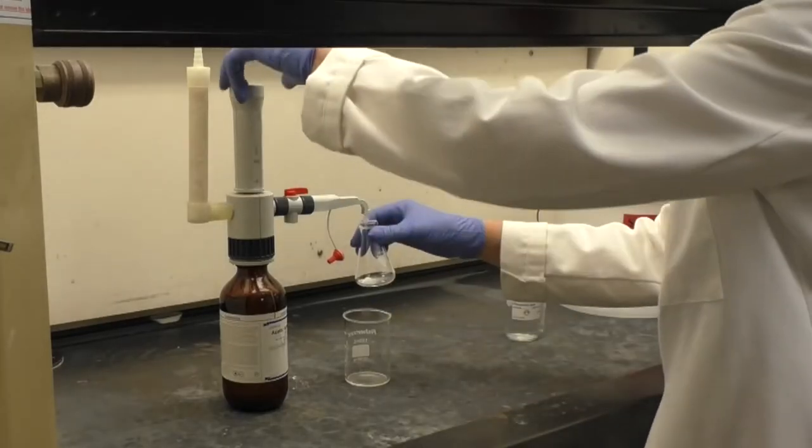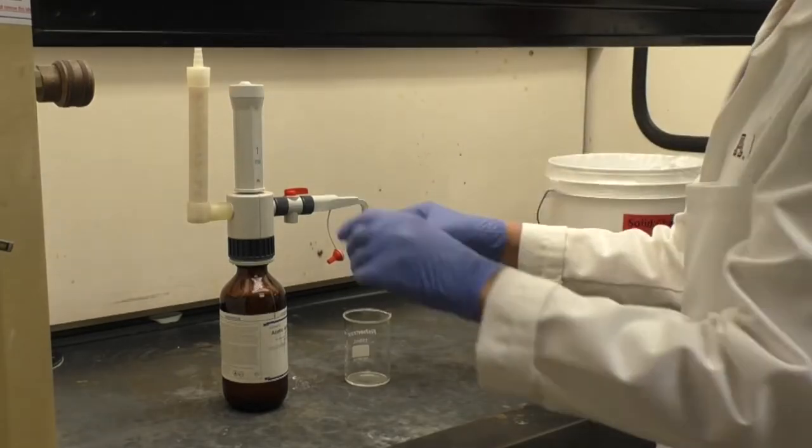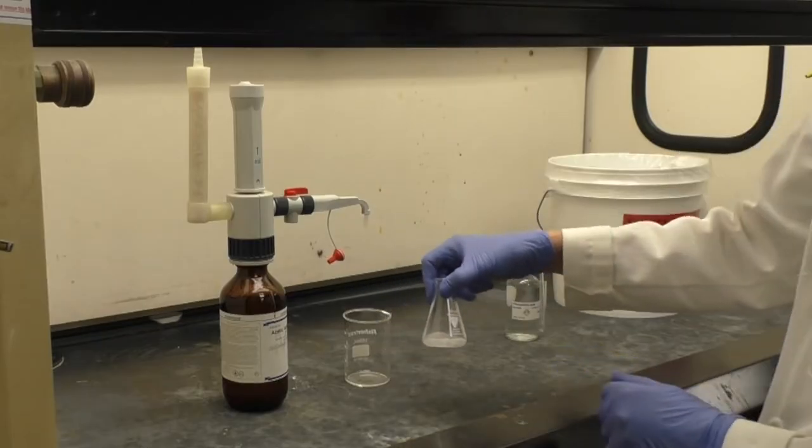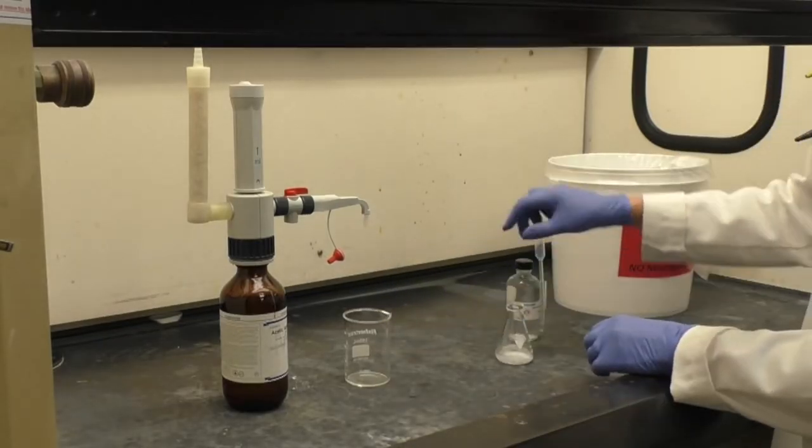Next, using the 1 milliliter pump provided, add 1 milliliter of acetic anhydride to the flask. Swirl well to mix.